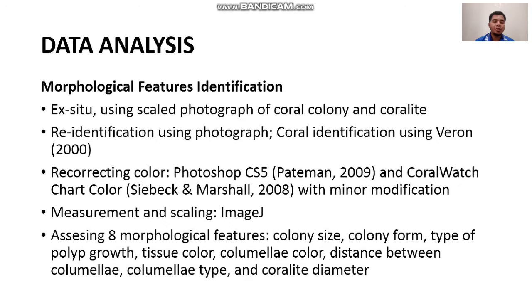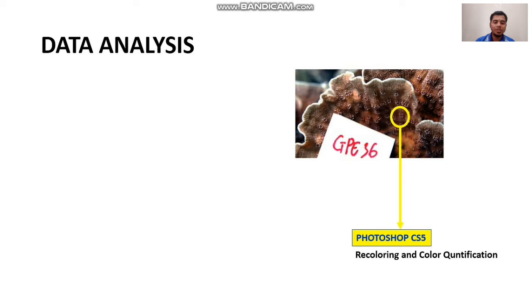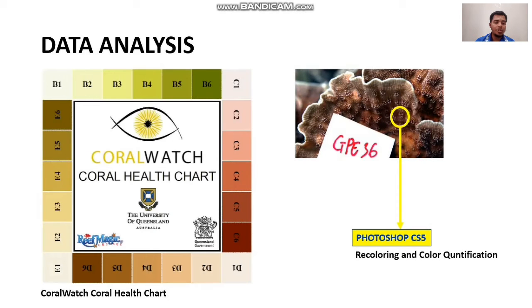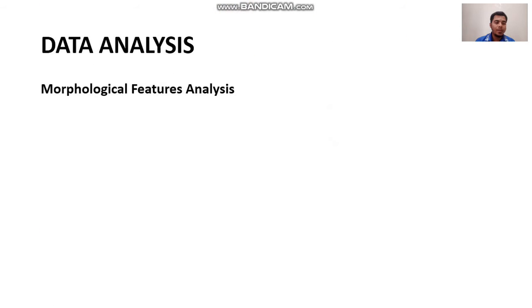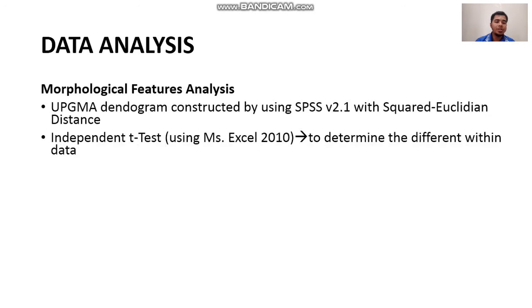We used Corwatch chart color for color quantification with minor modification, and conducted measurement and scaling using ImageJ. We assessed 8 morphological features including colony size, colony form, type of polygrowth, tissue color, columnar, color distance between columnar, columnar type, and color diameter. We performed recoloring and color quantification using Photoshop CS5 and Corwatch chart, and constructed a dendrogram using SPSS version 2.1, along with an independent t-test to determine differences within the data.